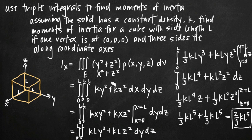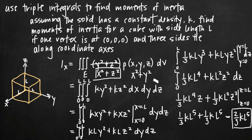That's how we evaluate this integral. If you go through the same steps for the moment of inertia about the y-axis — substituting x² + z² — and about the z-axis — substituting x² + y² — with everything else the same, you'll find you get the same answer in all three cases: I_x = I_y = I_z = 2/3 · k · l⁵. That's how you use triple integrals to find the moments of inertia about the three coordinate axes.